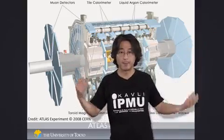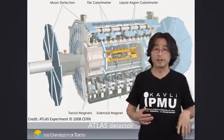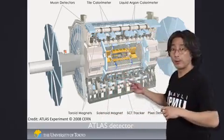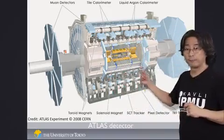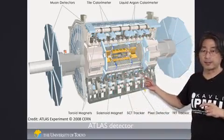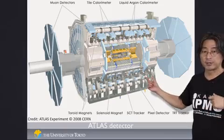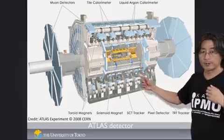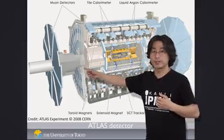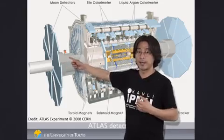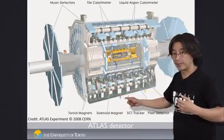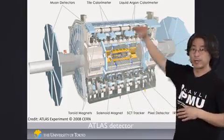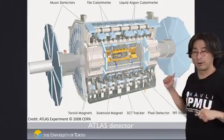And for that purpose, you need to build a pretty humongous device called a particle detector. What you see here is one of the four experiments being done at the Large Hadron Collider, or LHC — this is called the ATLAS detector. Compare the size of this apparatus — you can see the size of people standing here or standing down here. So you can appreciate the size of this device, which is like 20 meters high and 40 meters long.